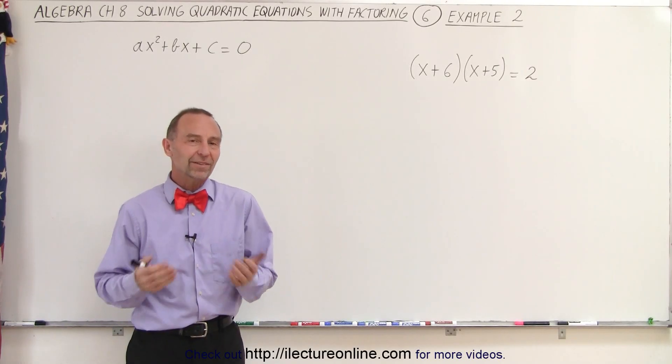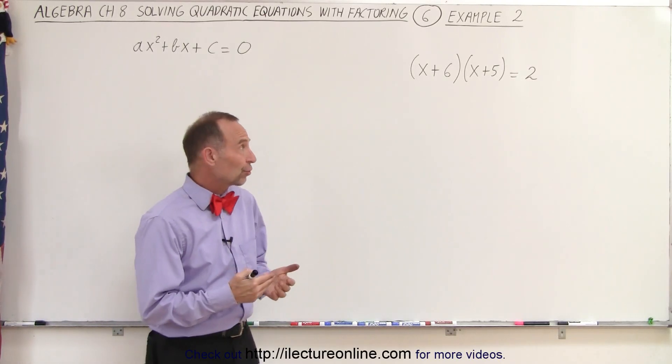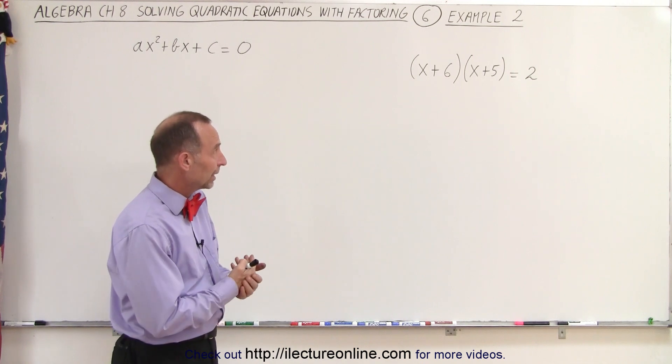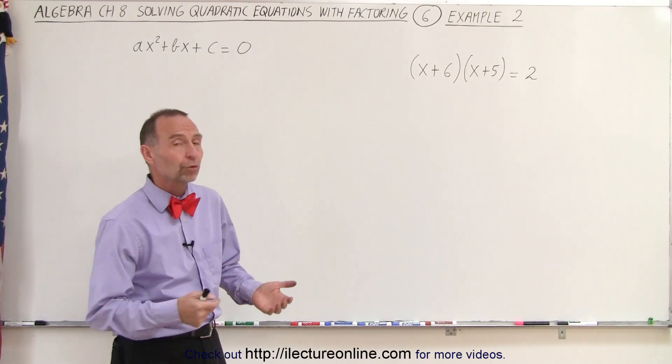Welcome to Electronline. Our next example is kind of in a strange format. The quantity x plus 6 times the quantity x plus 5 equals 2.